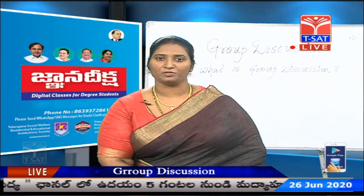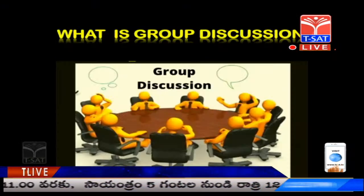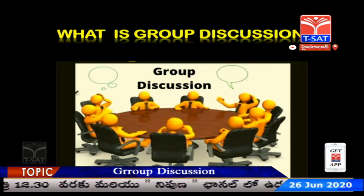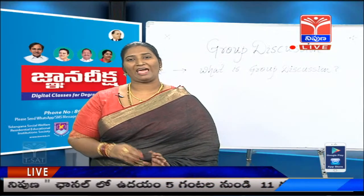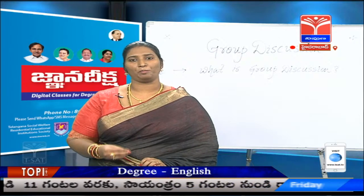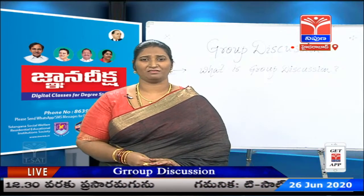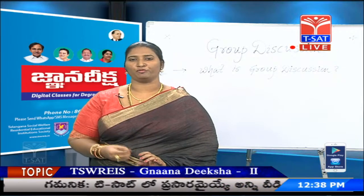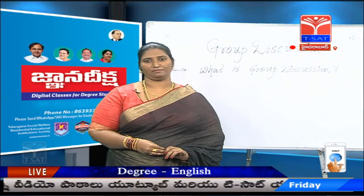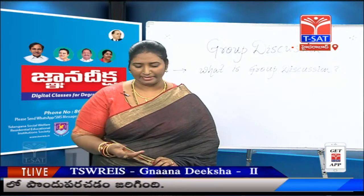So, what is group discussion? Group discussion, as the term suggests, is nothing but a group of people discussing a topic or a situation. In a formal group discussion, 8 to 12 people are formed into a group and given a topic or a situation to discuss. A panel observes the proceedings and evaluates the performance of the group members. Group discussion is popularly known as GD, and in recent times it is widely used as a tool to assess a candidate's personality.